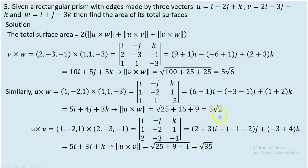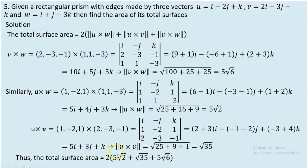Each of these values represents the area of one face of the prism. Since we have two congruent faces for each pair, we multiply the sum by two. The total surface area is 2(5√6 + 5√2 + √35). We multiply by two because the prism has six faces — three distinct face areas are obtained, and since we have identical paired faces, we multiply by two. This concludes question number five.